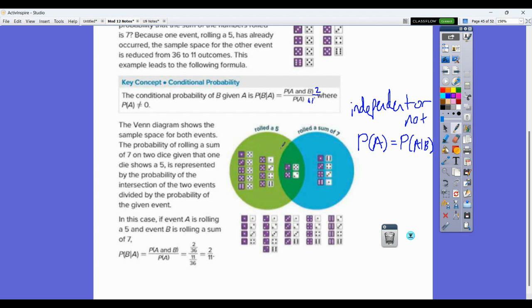So counting through all the outcomes, the probability of A would be 11 out of 36, and the probability of A given that B has already occurred. So we already know that we rolled a sum of 7. So we would have, given B has already occurred. So B is the sum of 7.